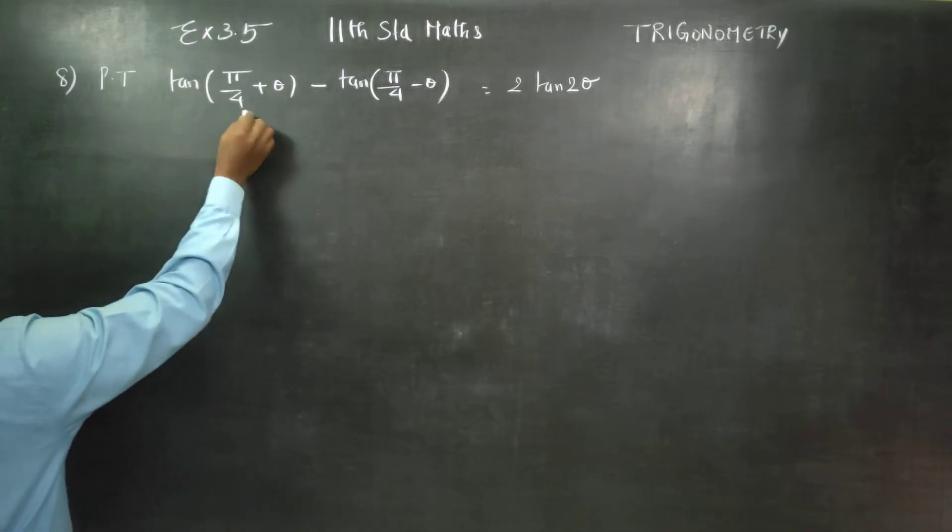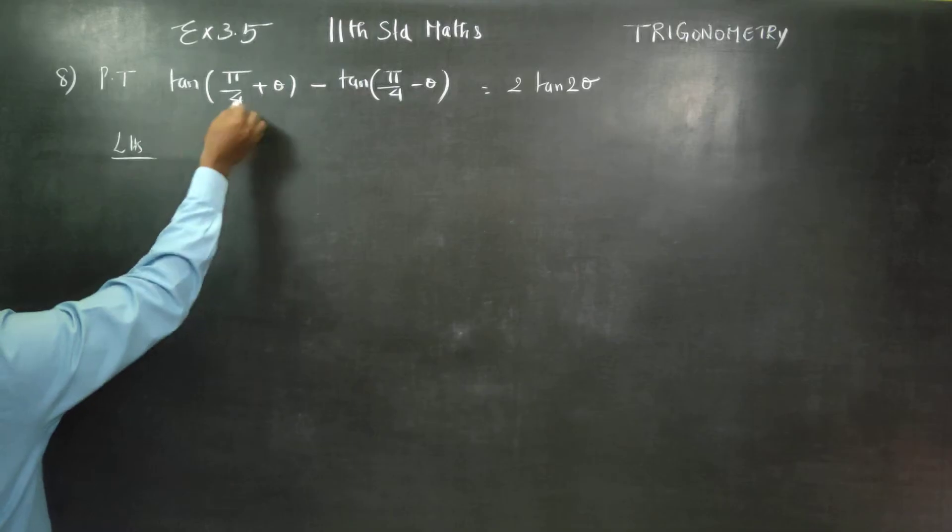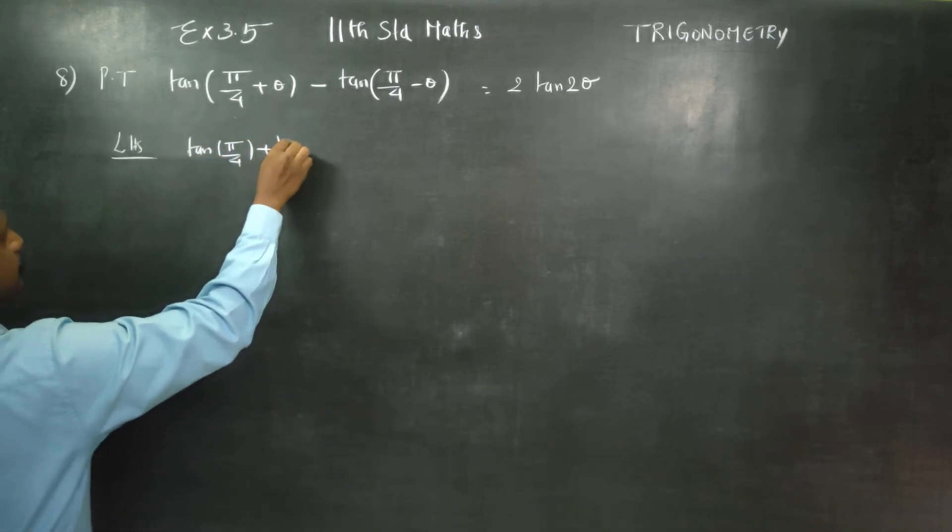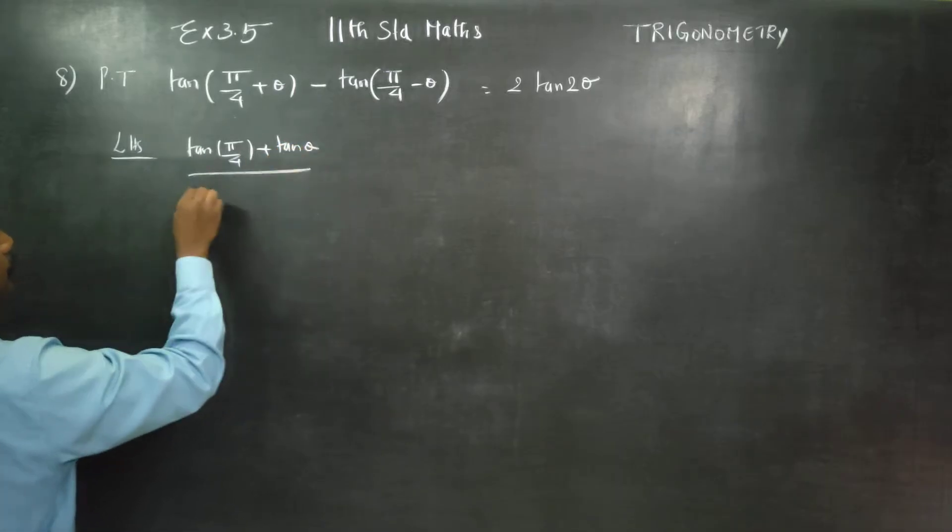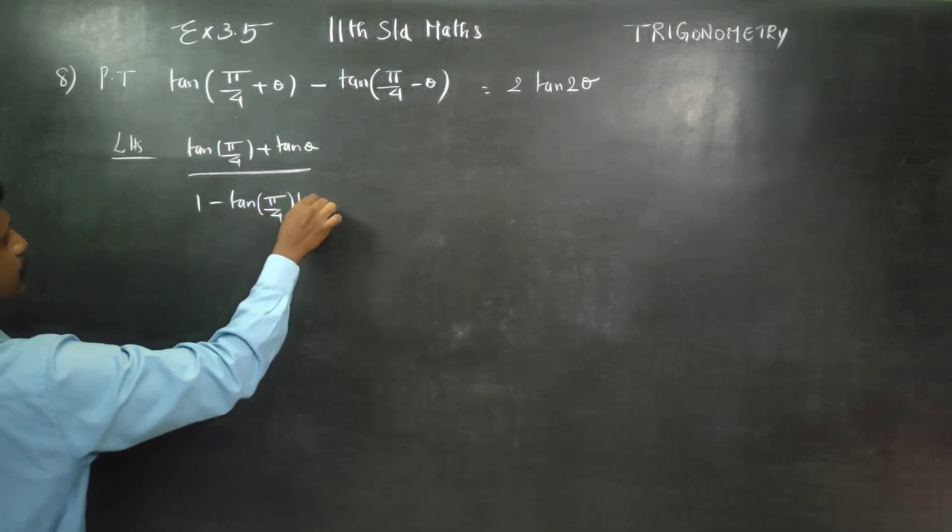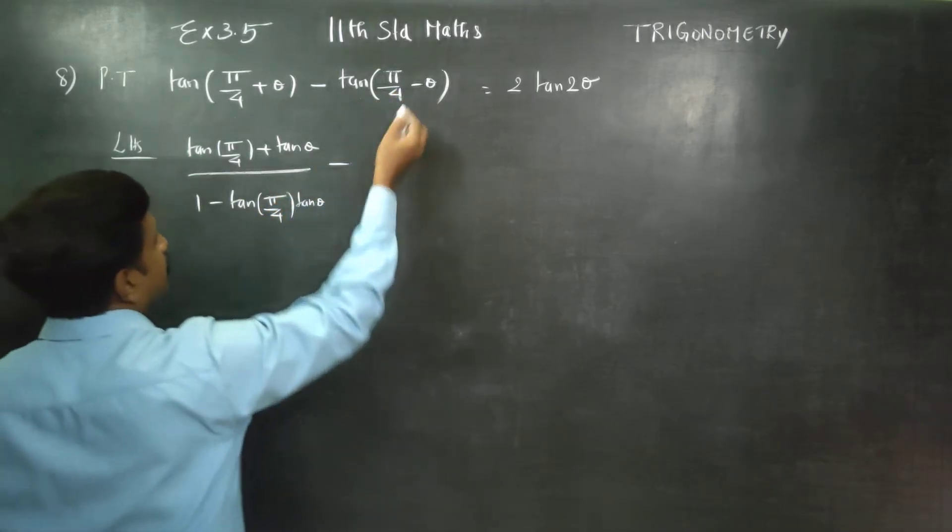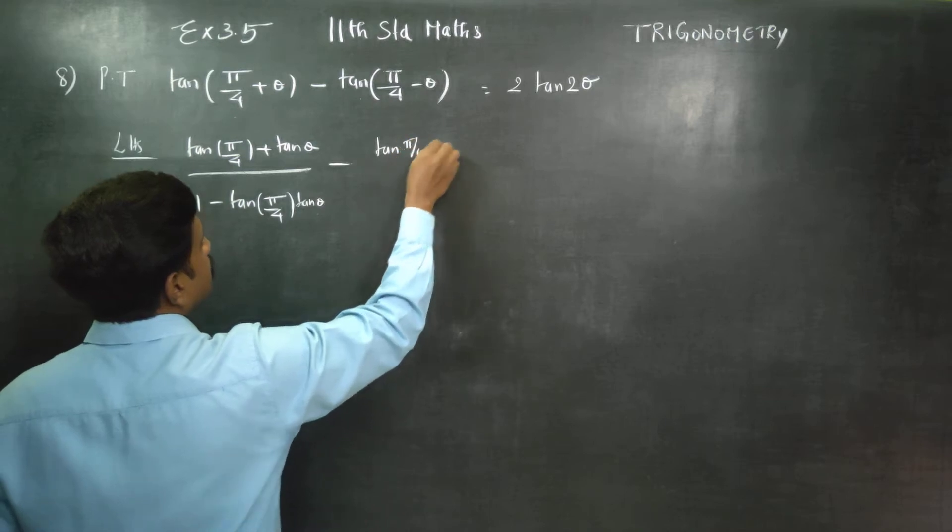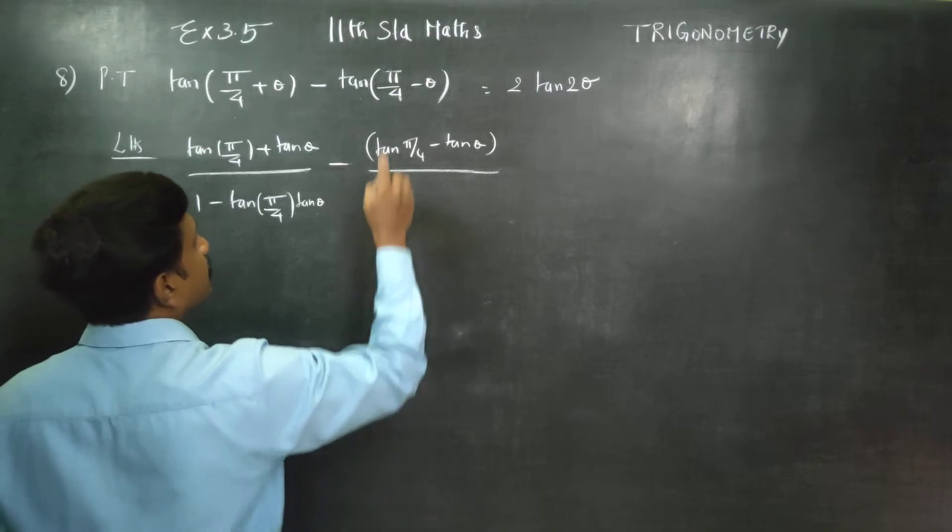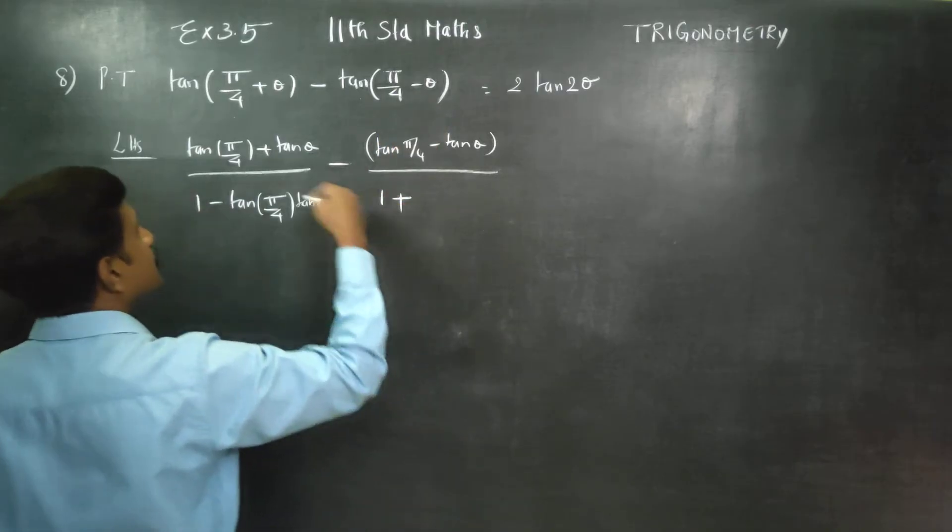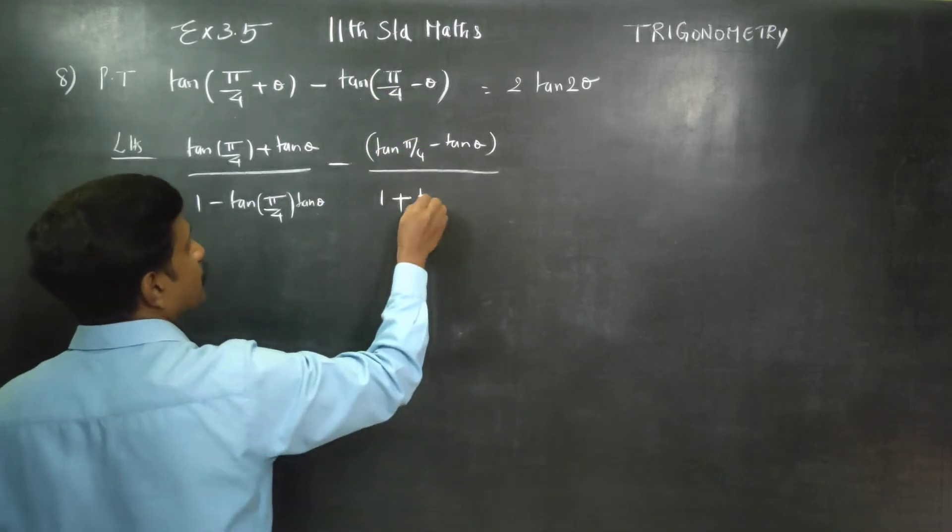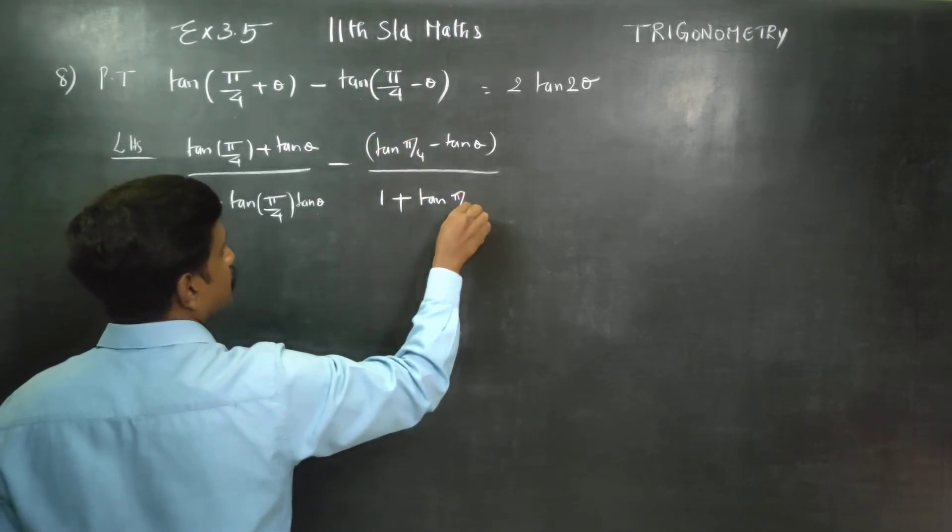First of all, we will apply tan a plus b formula in this LHS. What is tan a plus b formula? Tan a plus tan b by 1 minus tan a tan b. Again, tan a minus b formula, tan a minus tan b by 1, this is the minus and the plus is the opposite. Minus and the minus is the plus. 1 plus tan pi by 4 into tan theta.